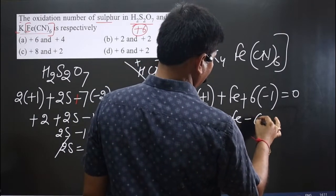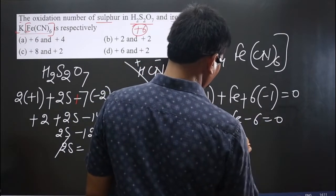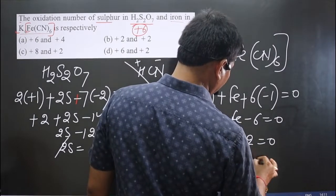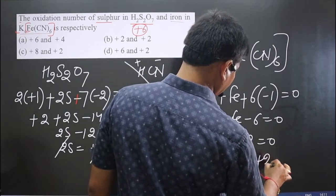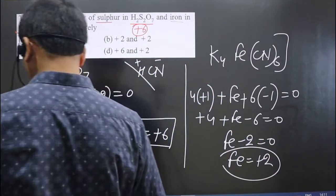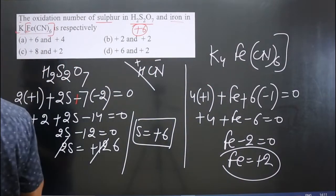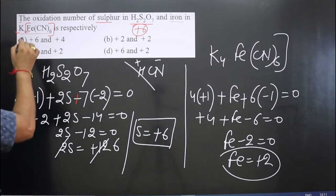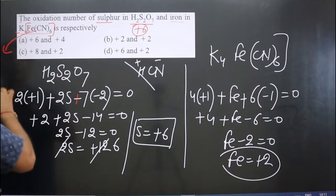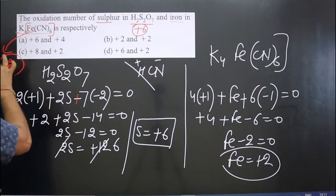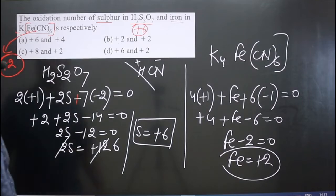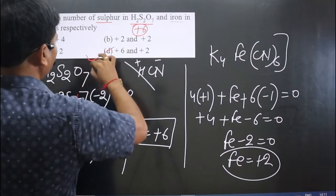Setting up the equation: 4(+1) + Fe + 6(−1) = 0, giving +4 + Fe − 6 = 0, so Fe − 2 = 0, meaning iron is present in the +2 oxidation state. So in the first compound sulfur is +6, and in the second compound iron is +2. Therefore option D is correct.